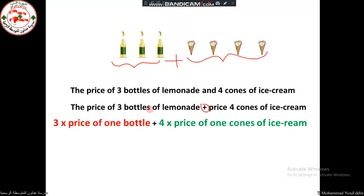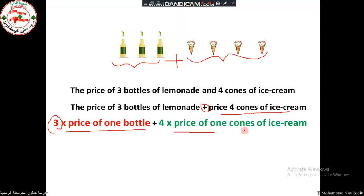To calculate the price of three bottles, I first find the price of one bottle and multiply by three — that is, find the unit price and multiply by three. And to calculate the price of four cones of ice cream, first find the price of one cone, and then multiply by four.